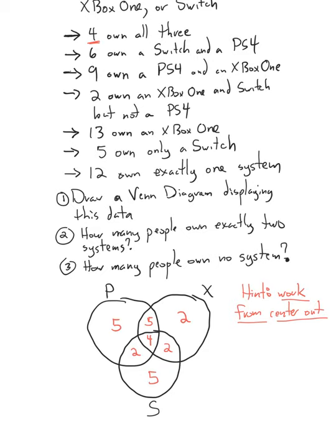It says there were 50 people that were surveyed. If you add up the numbers inside our diagram — 5, 10, 12, 14, 18, 20, 25 — there are still 25 people missing from this diagram. Well, it turns out there's only one place for them left to go: they don't own any system. So outside of this diagram, you're going to have 25 people.